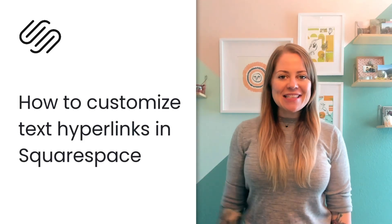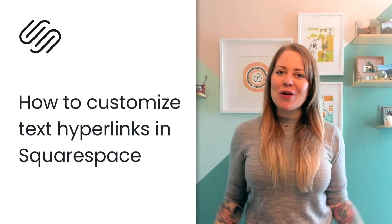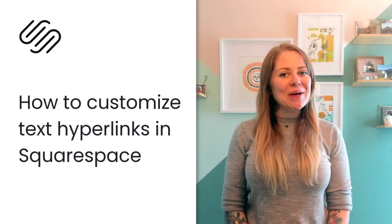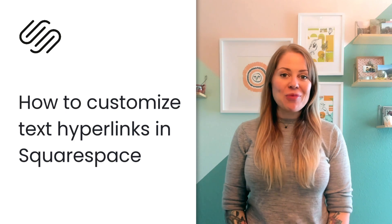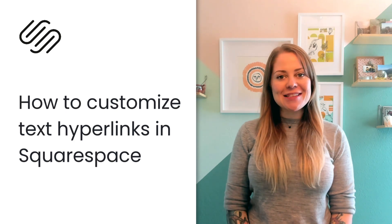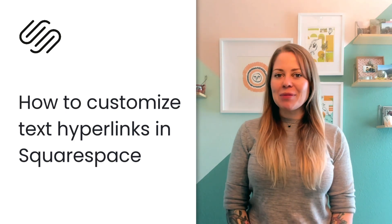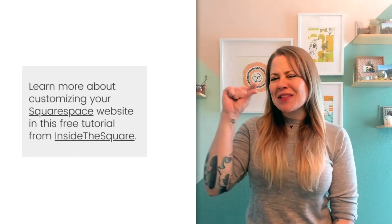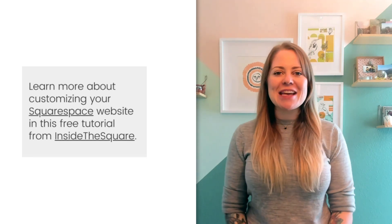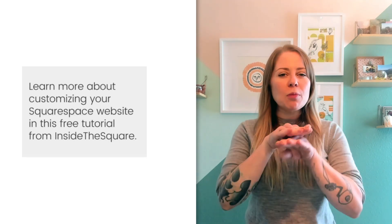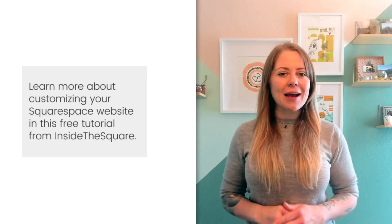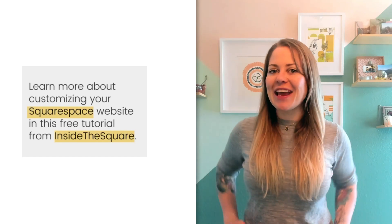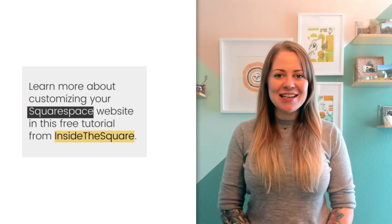Hey there, Becca here from Inside the Square and welcome back to my channel. In this tutorial, I'm going to teach you how you can customize the style of a hyperlink in a text block in Squarespace. We'll be using just a little bit of custom CSS to remove the automatic underline, add our own background color, and even create a hover effect.